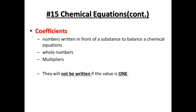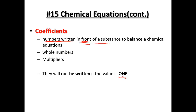Coefficients are the numbers placed in front of our substances to balance our chemical equations. They're whole numbers and the math they do is multiplication applied to just that substance. We don't write the number one — we assume it's there. Coefficients describe the relative amount of each substance reacting or being produced. For example, two waters react to produce two hydrogen gas molecules and one oxygen gas molecule — a two to two to one ratio.